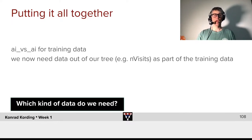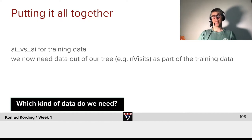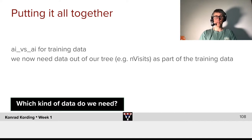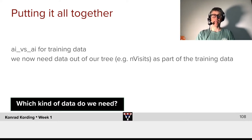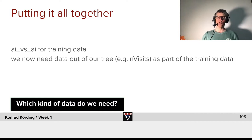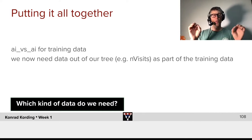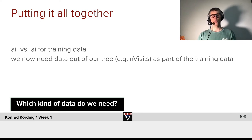Now we will put it all together. We will use AI versus AI for training data. We need data out of our trees, such as the number of visits, as part of the training data. And before we do the actual training, ask yourself: what is exactly the data that you need to be able to train the network as we have it here?